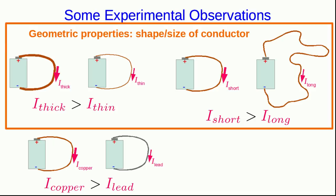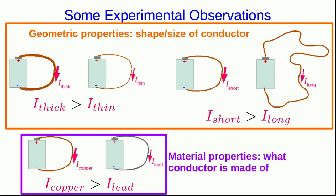The thickness and the length are geometric properties. They're properties of the shape and size of the conductor, whereas the material property is something separate. It's not to do with the shape, it's to do with what the conductor is made of.